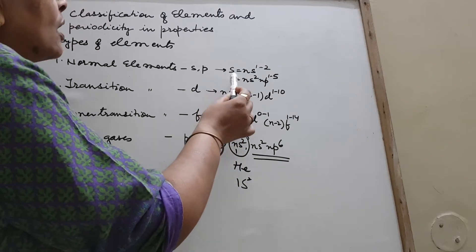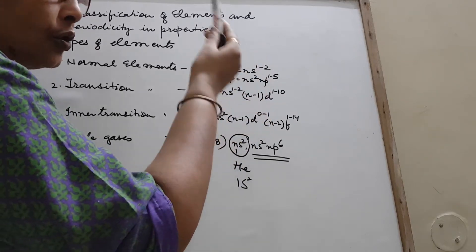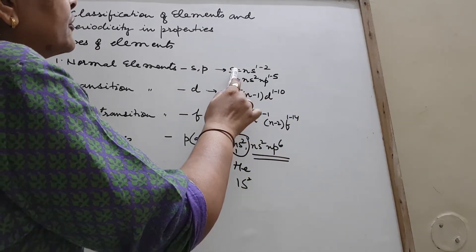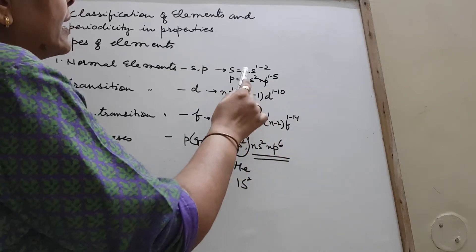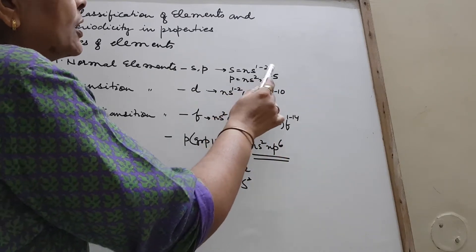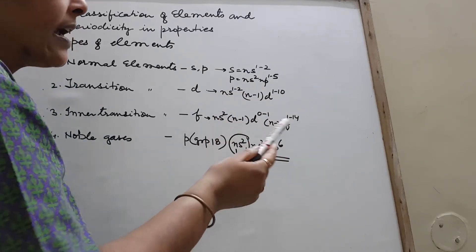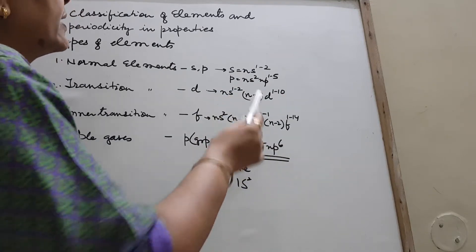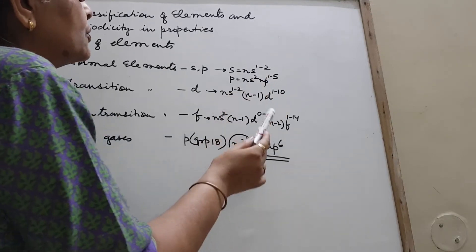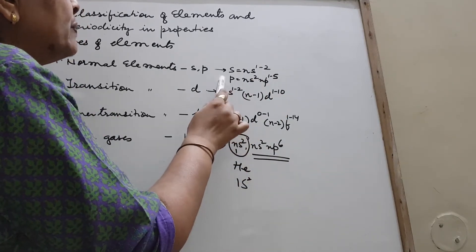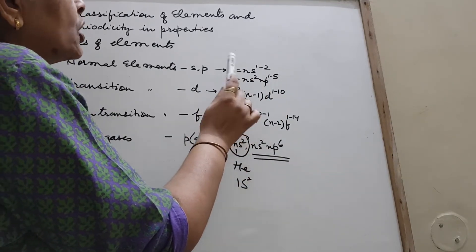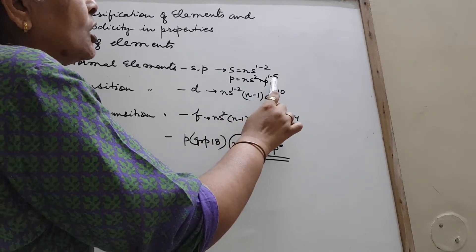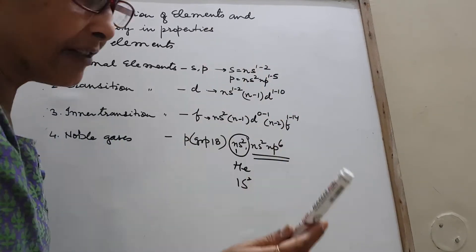So they have the following configurations, as you know from Aufbau principle. For S block elements, the configuration is NS1 to 2, where N is the number of shells. And if they belong to P block, the configuration will be NS2, NP1 to 5.